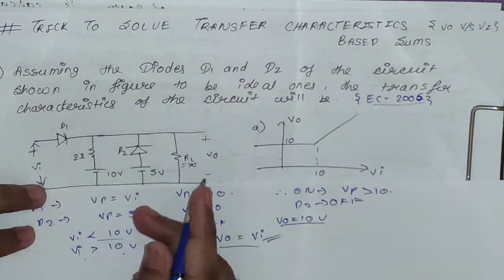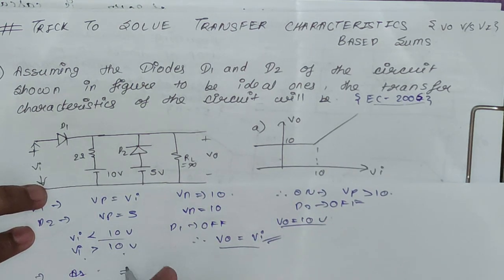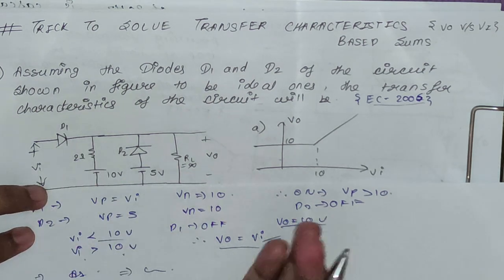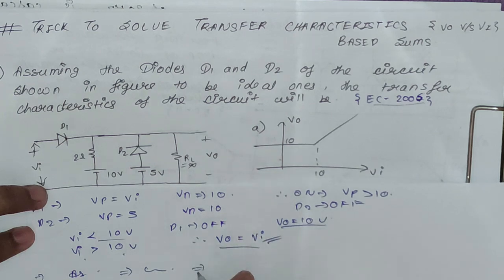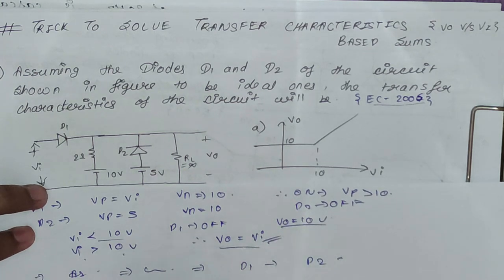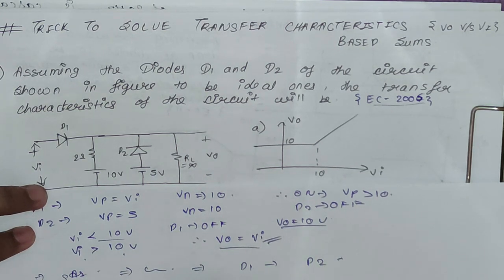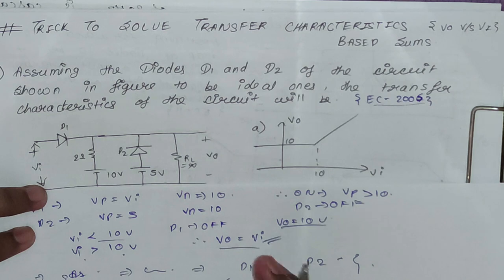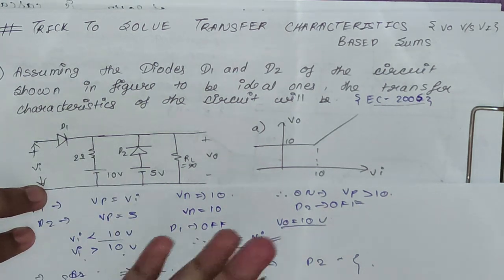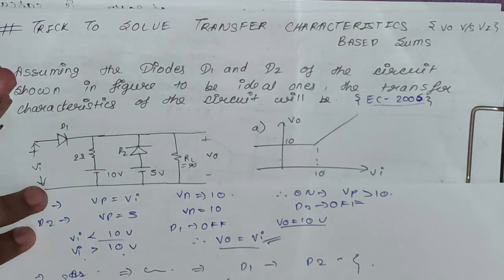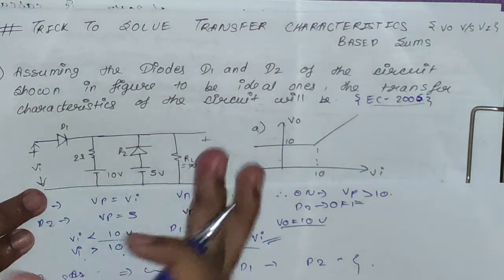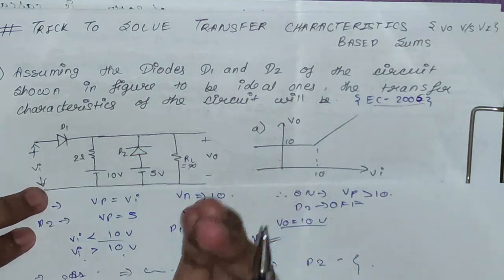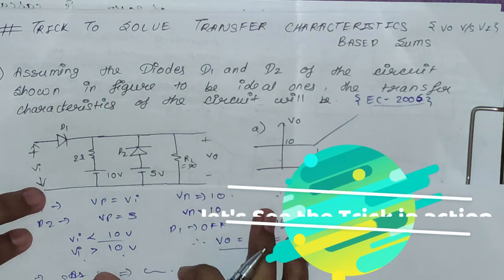The traditional way to solve this type of problem is to assume certain conditions without knowing which diode will turn on at which condition. At each condition we have to check whether D1 is on or D2 is on, and after that only we figure out the transfer characteristics. With the trick, what we do is first check for what condition our diodes are being turned on, then accordingly check the condition. So instead of assuming the condition, we derive the condition.